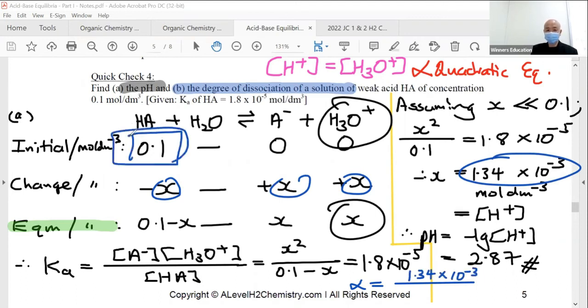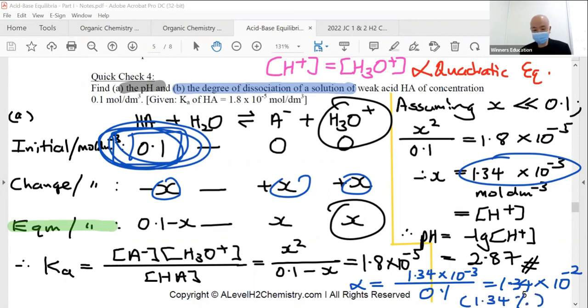Original concentration of acid, 0.1. So it's 1.34 times 10 power minus 2. Also can say it's 1.34%, and multiply by 100.